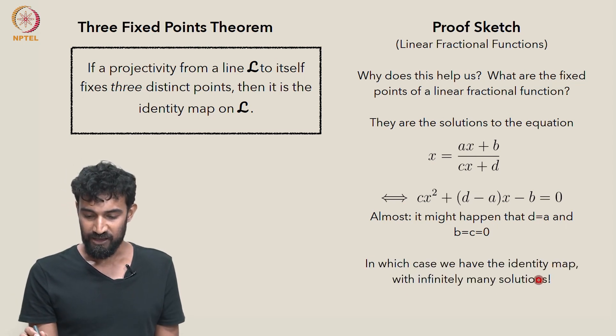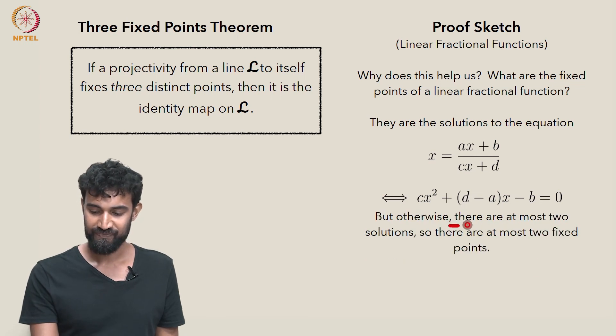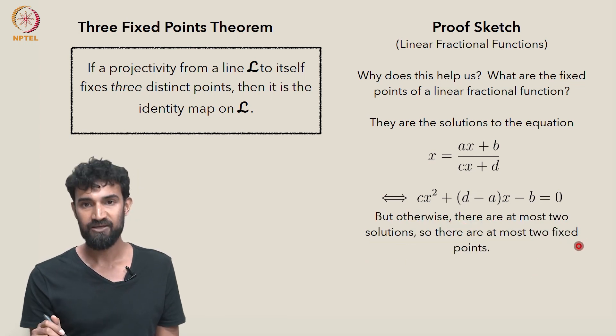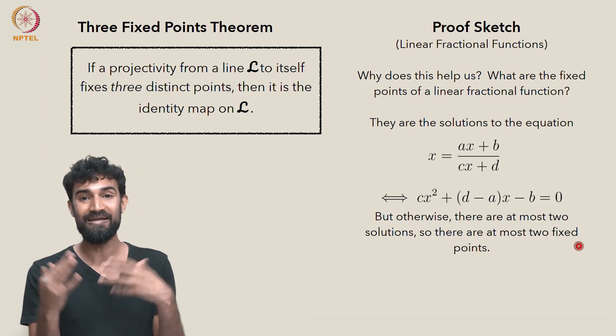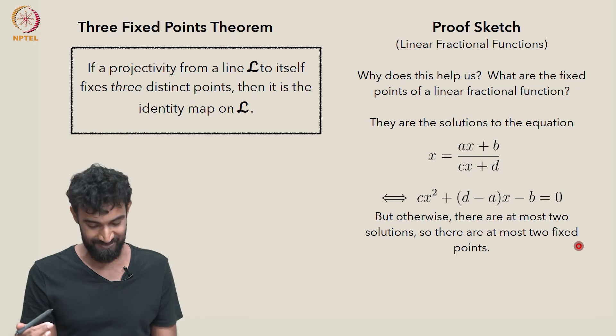So if that's not the case, then we have at most two solutions, which means there's at most two fixed points. So there's either 0, 1, or 2 fixed points, or infinitely many fixed points. There's four possibilities.